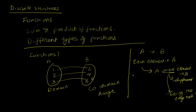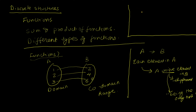We should always ask the why question — why define something like a function and put all these restrictions? You are allowed to map two things to the same thing, but you're not allowed to map one thing to multiple outputs. The idea of all these topics is to model the real world and construct useful things. Let's look at a typical example.